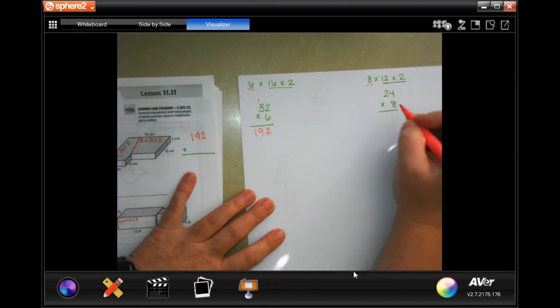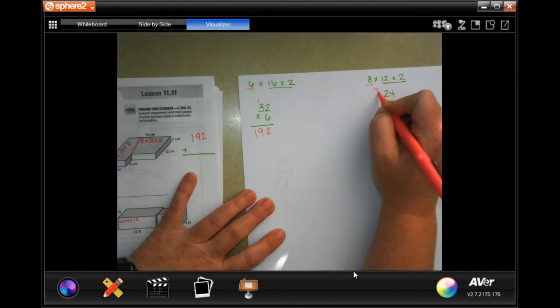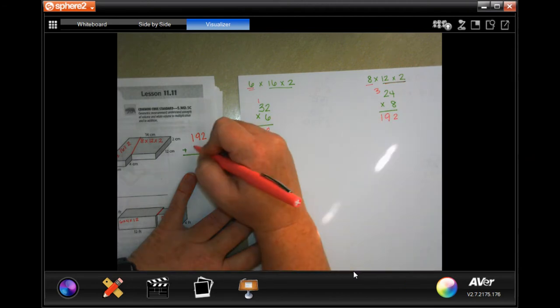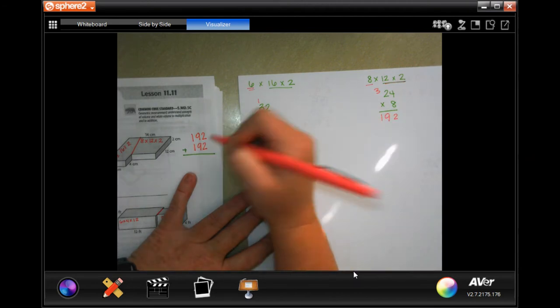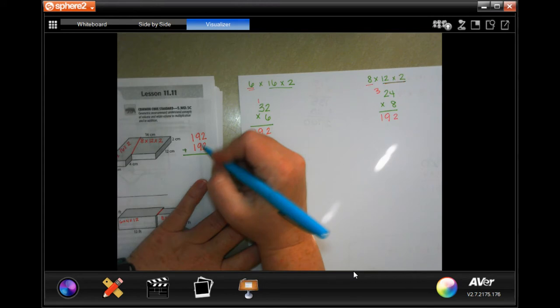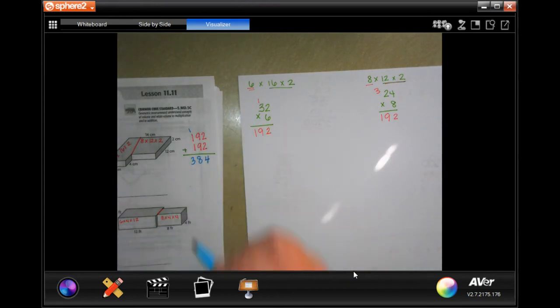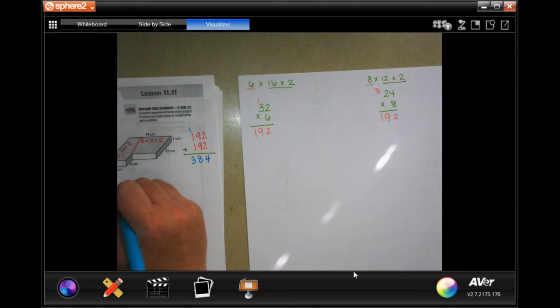8 times 4 is 32, carry the 3. 8 times 2 is 16 plus 3 is 19. 192 again. Now I'm just going to add those two together: 4, 18 carry the 1 and 3. 384, and you can write centimeters cubed or cubic centimeters, totally your choice.